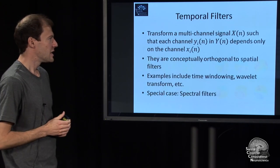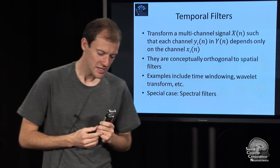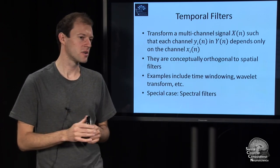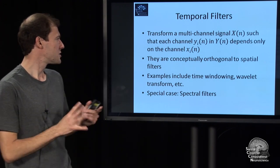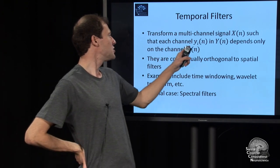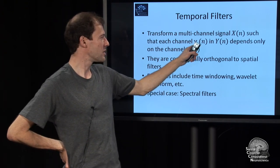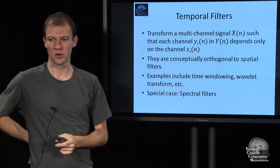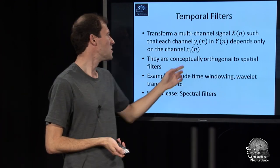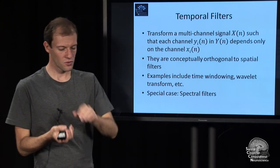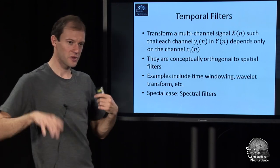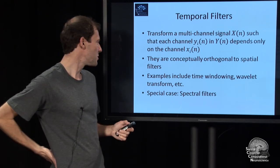The next category of filters is, in a sense, orthogonal to that conceptually. That's what we call temporal filters. They take a multichannel signal X, and they're defined such that each channel, the ith channel of the output, depends only on the ith channel of the input. So they don't go across channels, they don't go across space. But they can transfer information across time. They're not spatial filters.